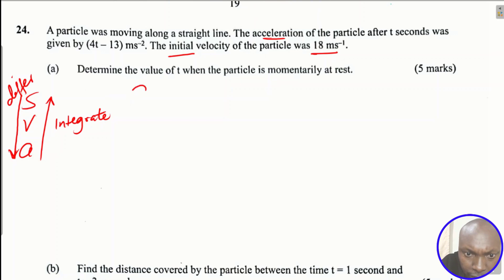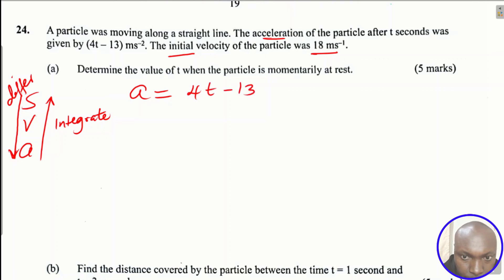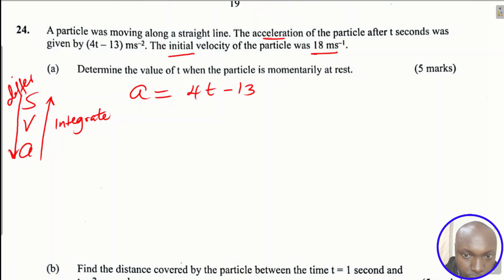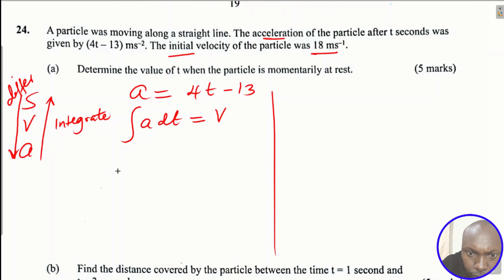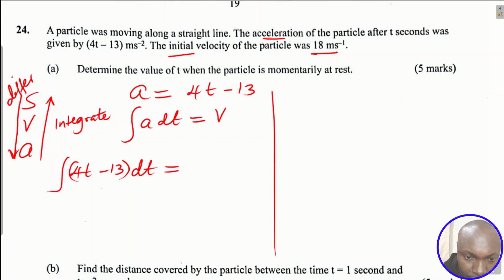In this question we are given the expression for acceleration: 4t minus 13. We are also given the initial velocity. Since we want to move from acceleration to velocity — which is an upward direction — we are going to integrate. To get velocity, we integrate the acceleration expression 4t minus 13 with respect to t.